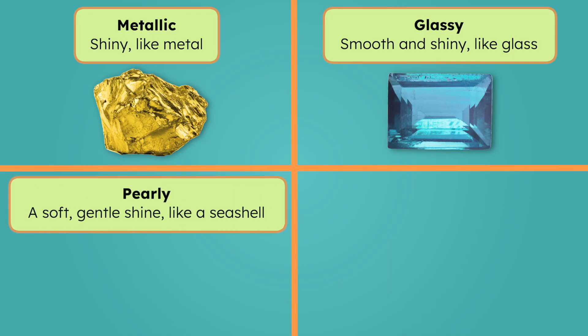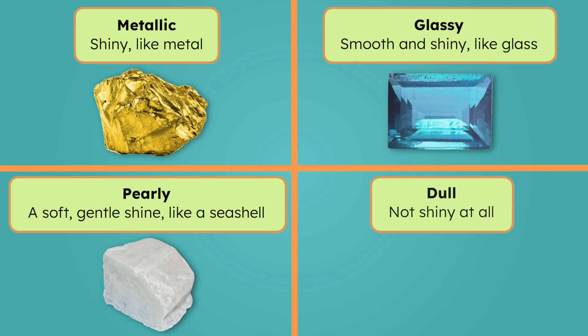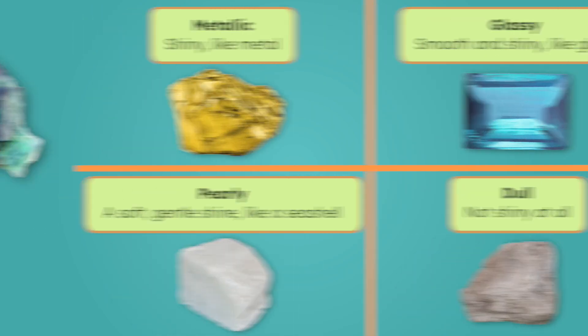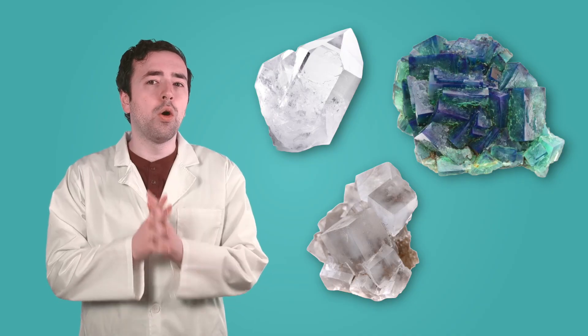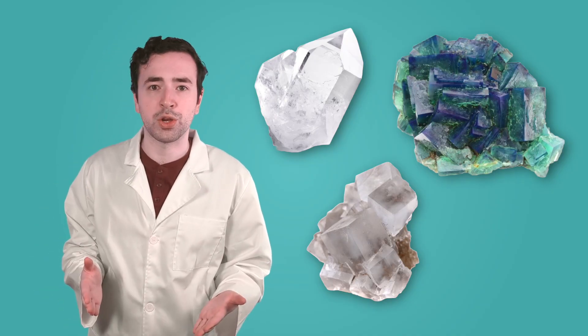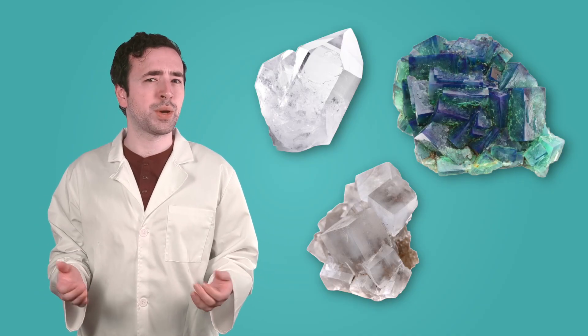A pearly luster has a soft, gentle shine, like a seashell or a pearl. Talc, which is used to make things like baby powder and makeup, has a pearly luster. Minerals with a dull luster aren't shiny at all. Gypsum, which is used to make chalkboards, has a dull luster. It looks like all three of my minerals have a glassy luster, so we'll need to look at some other properties to identify them.